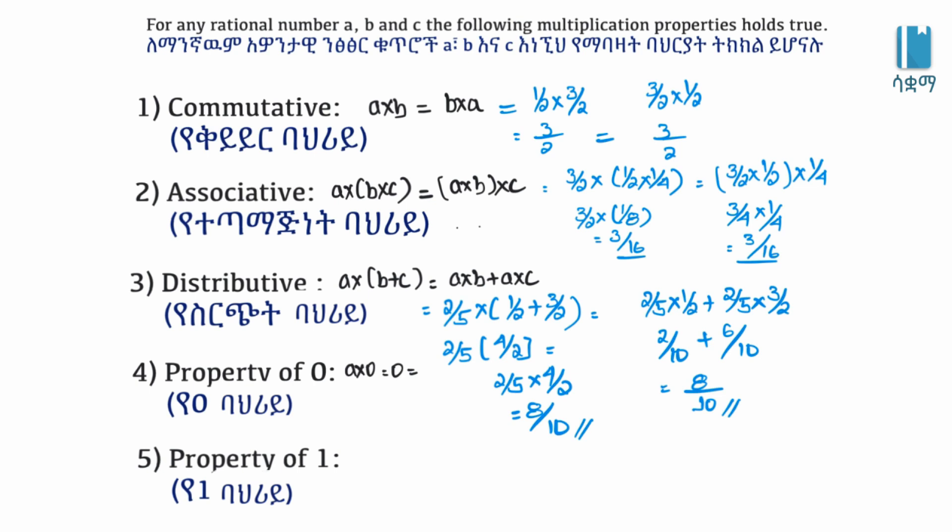Property of 1: When you multiply any number by 1, you get the same number. A times 1 is A, and 1 times A is A.